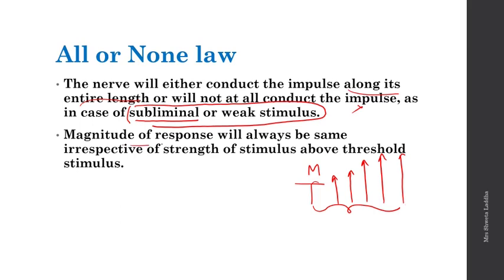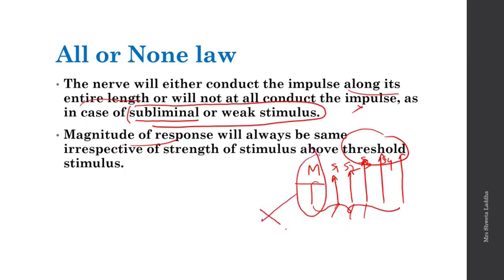Whether the stimulus is strong 1, strong 2, strong 3, or strong 4 — S1, S2, or S3 — it doesn't matter. The magnitude of response will always be the same irrespective of the strength of the stimulus above threshold. Below threshold there will be no response; from threshold onwards, there will be a similar type of response.